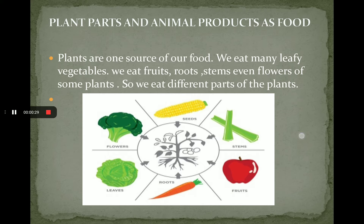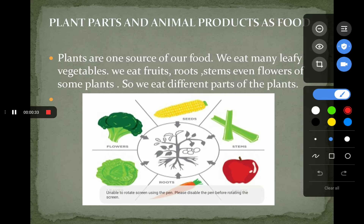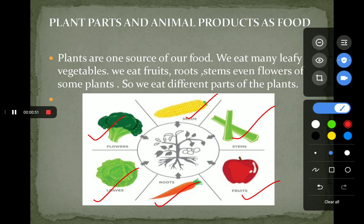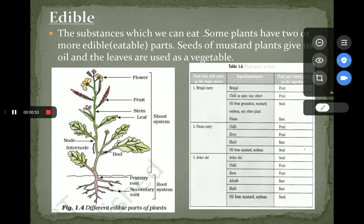Here, as you can see, there is a plant and there are 6 different parts of the plant that we eat. We eat seeds of some plant, we eat stems of some plant, we eat fruits, roots, leaves and flowers of different plants. Now, in the next slide, we will study about edibles.